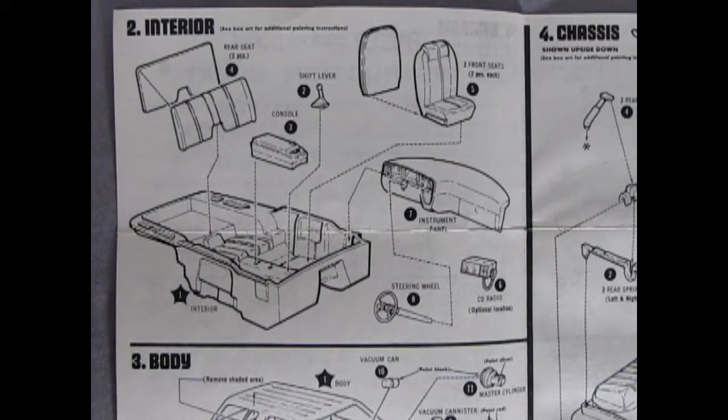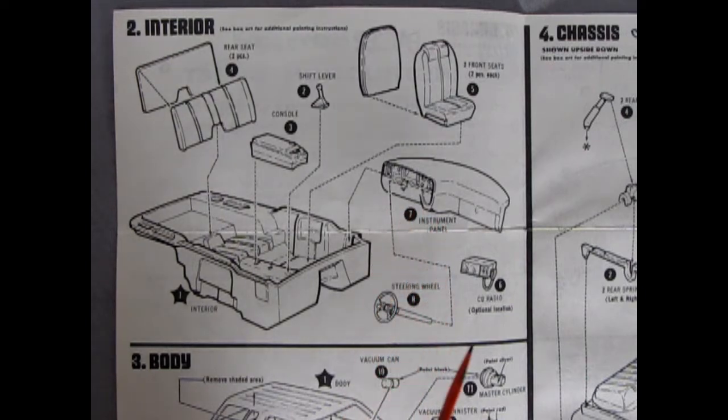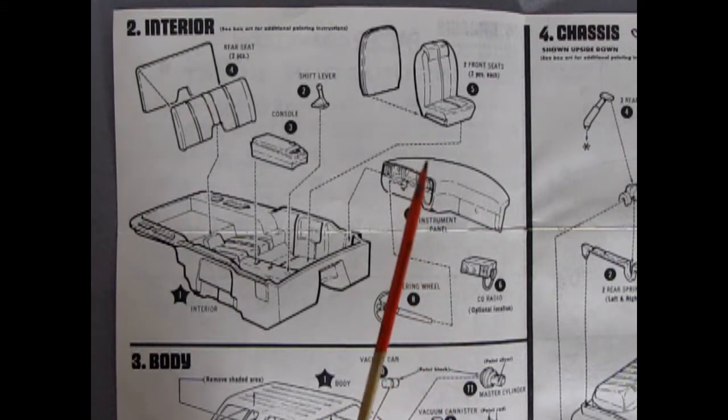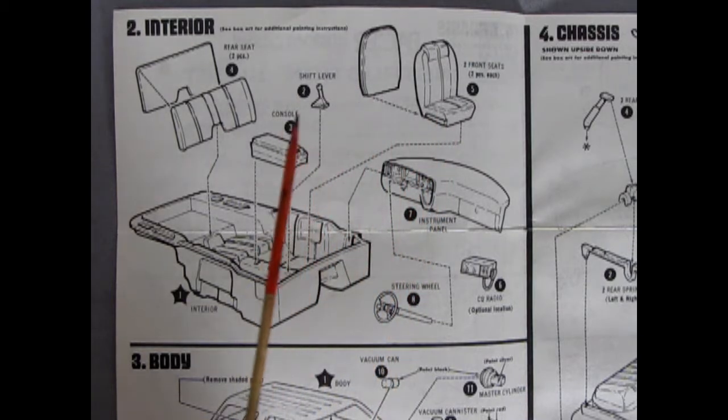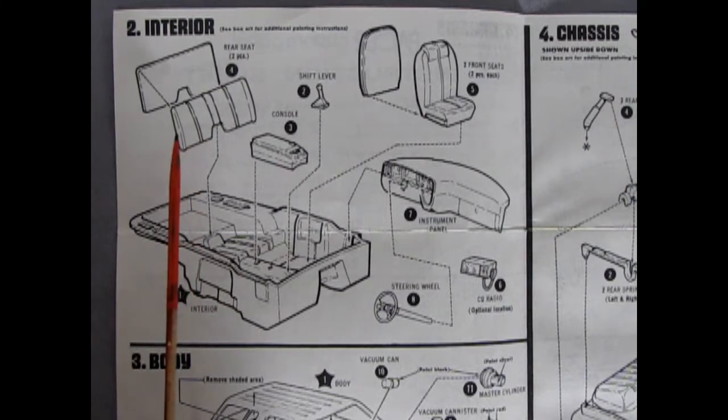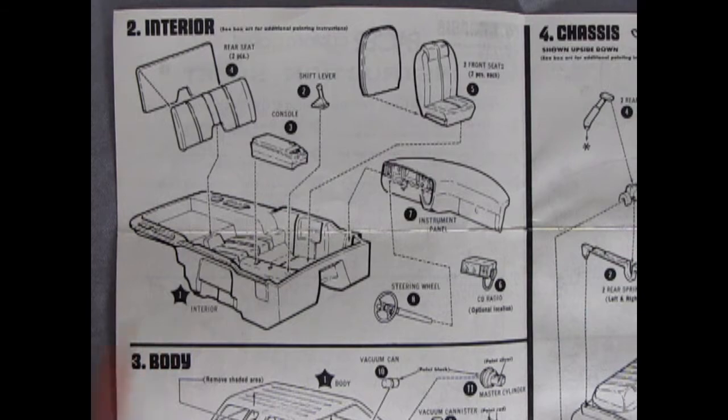Panel 2 shows our interior being assembled. Here we have our steering wheel which goes into the instrument panel. We've got a CB radio which was very popular in the 70s and its location is optional. Then we've got our two front bucket seats which have a front and a back to them. There's a shift lever, a center console, and our rear back bench seat has a front and a back as well which all go into this interior pan.